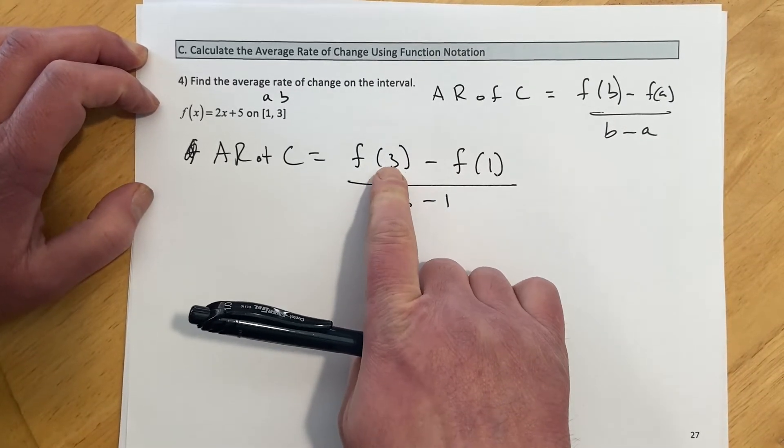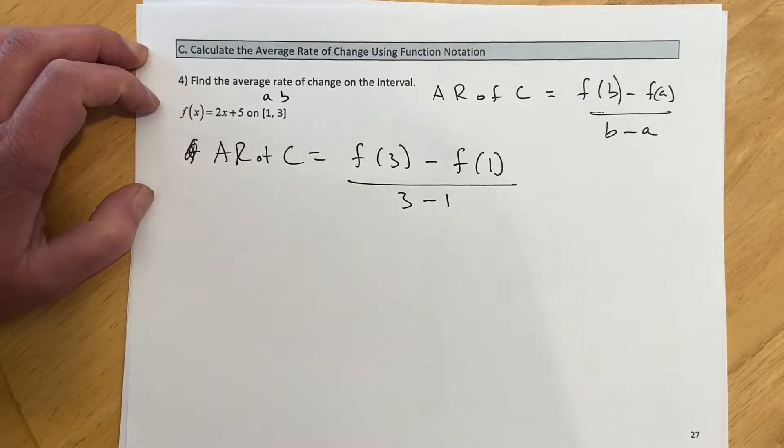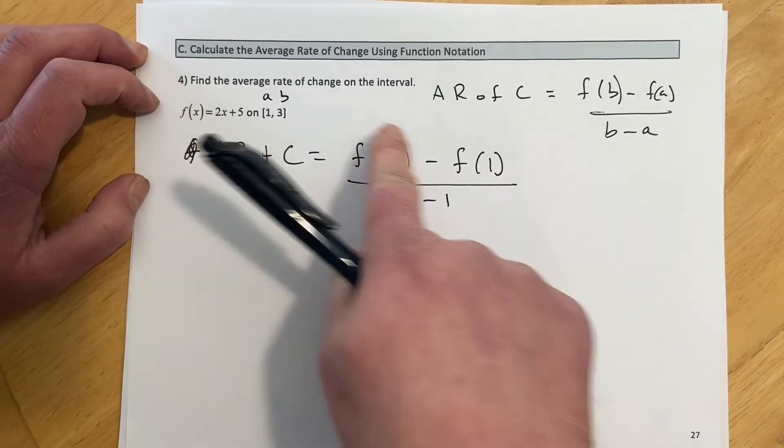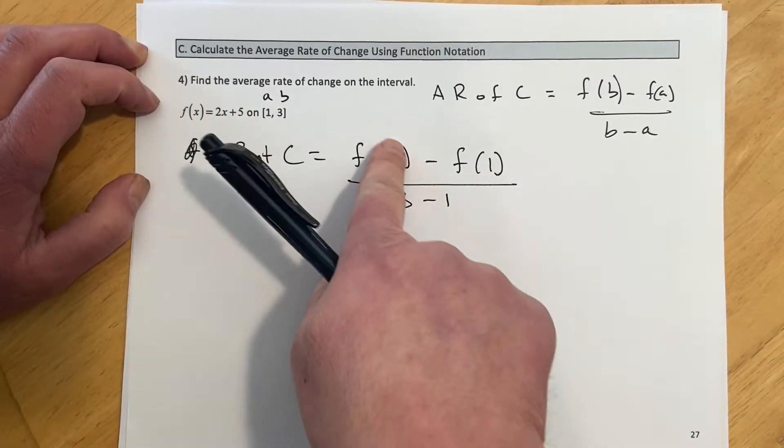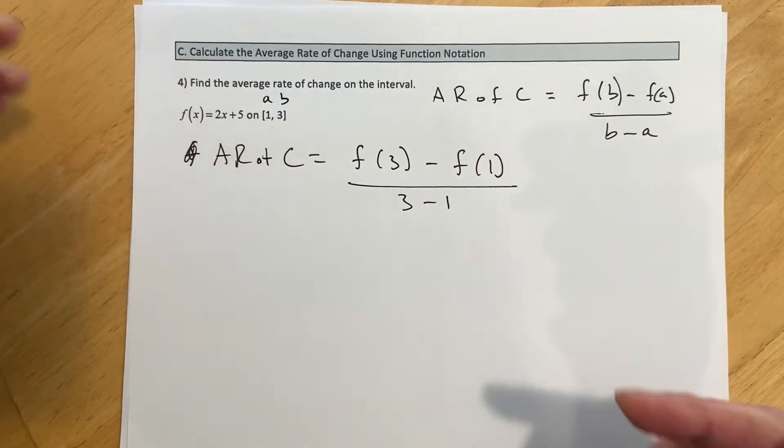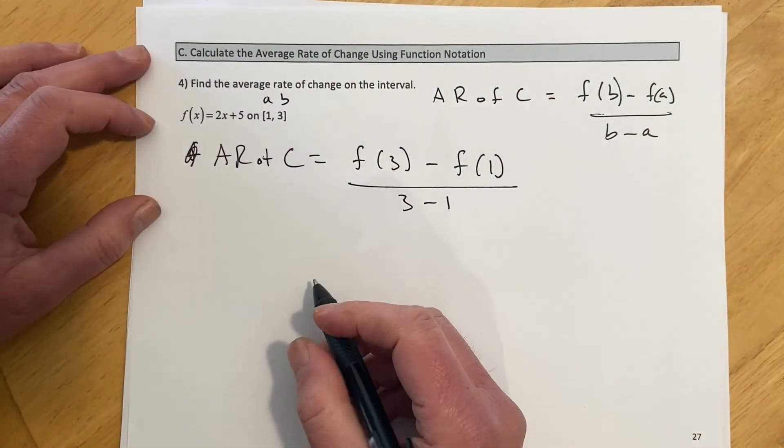So all this is saying is I'm going to take 3, I'm going to plug it in here and figure out what that y would have been. Same thing with the 1s, I'm just finding my y2 and my y1. I'm going to do that math within the equation itself.